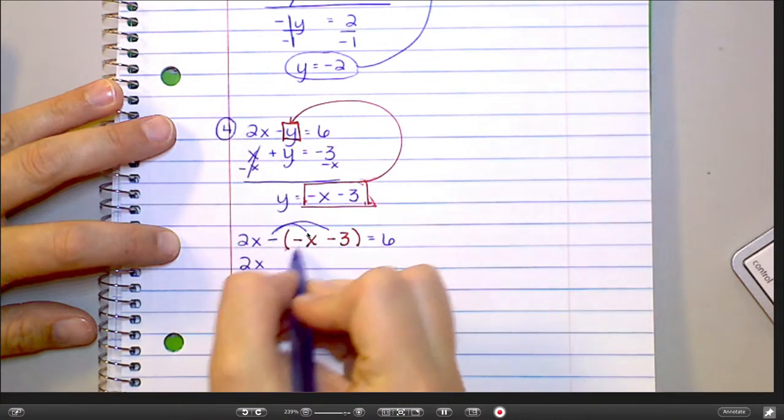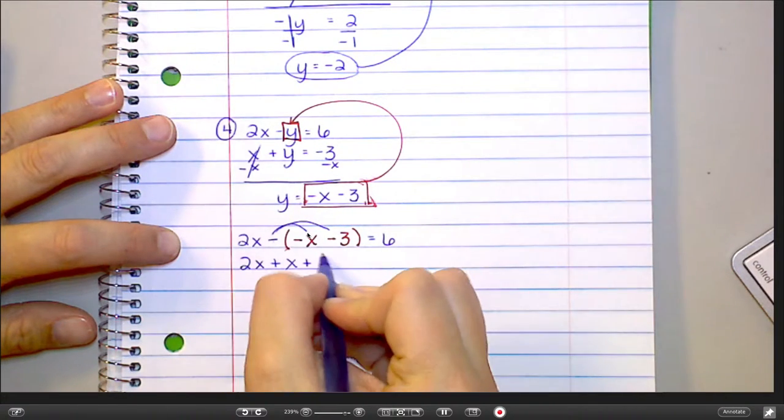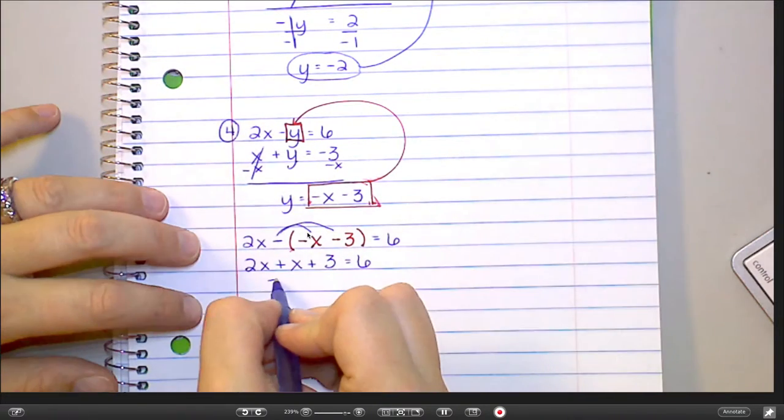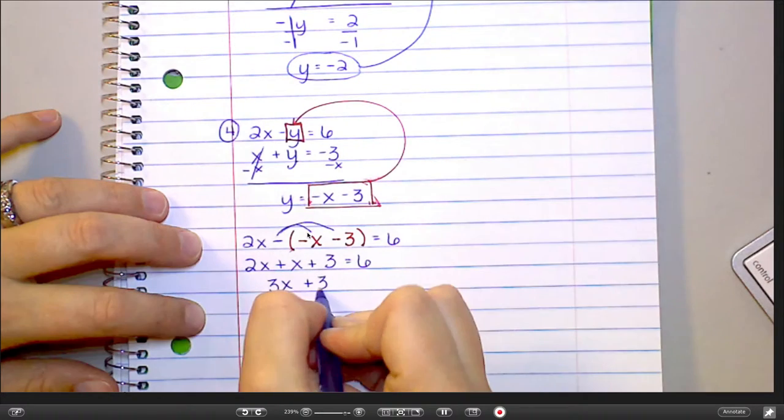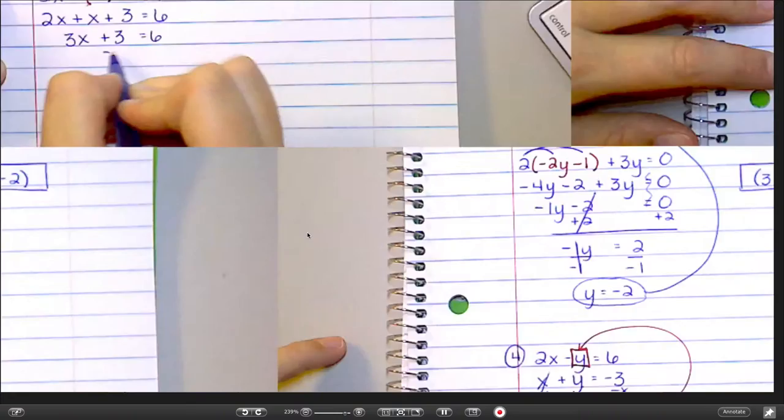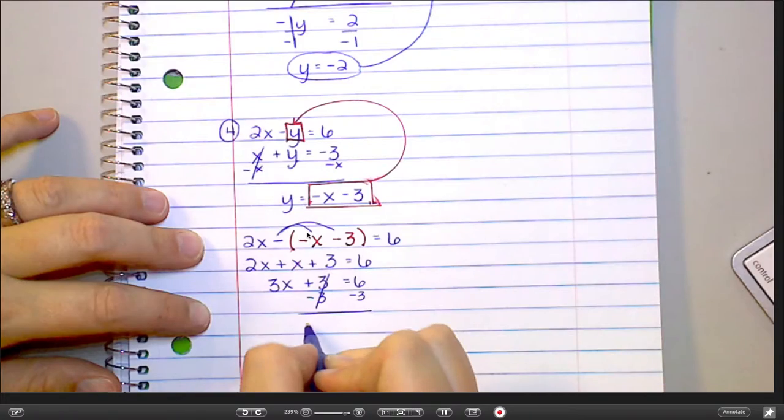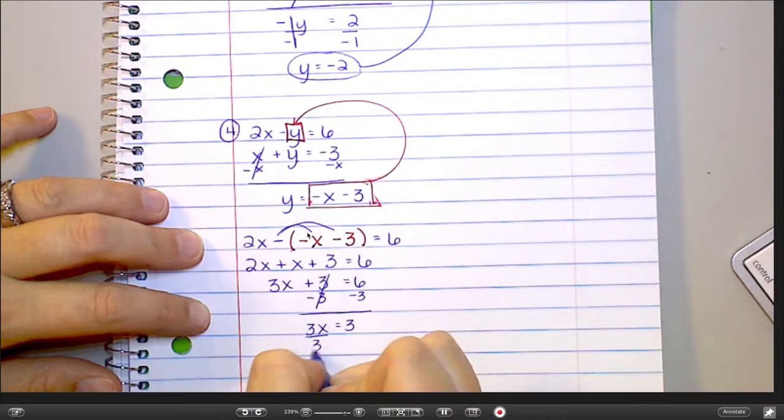So this is now going to become a plus x and a plus 3. Find your mistake? I just distributed it. Yeah, those negative signs will mess you up. 3x plus 3 equals 6. Subtract 3. So 3x equals 3. Divide by 3. x equals 1.